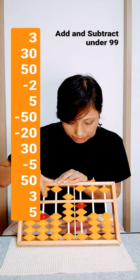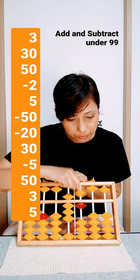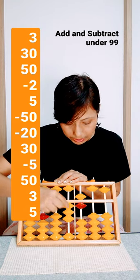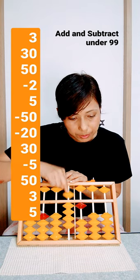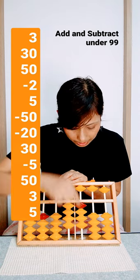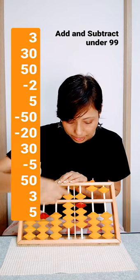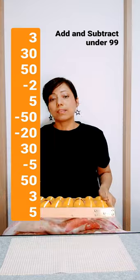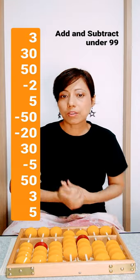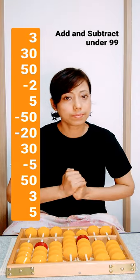Then remove 2 and place 5, remove 50, remove 20, place 30, remove 5, place 50, and place 3 and place 5. And remaining is 9, 9... 99 is your answer. For the next notifications you have to like, share, subscribe my page channel.